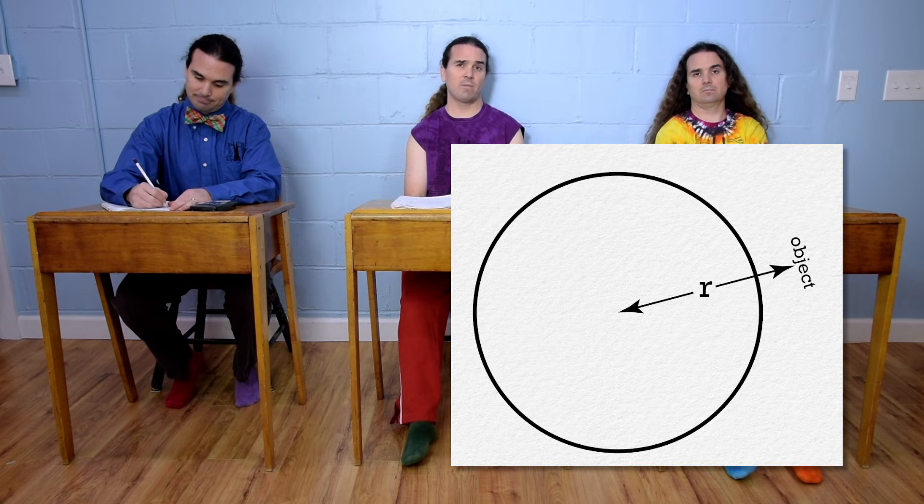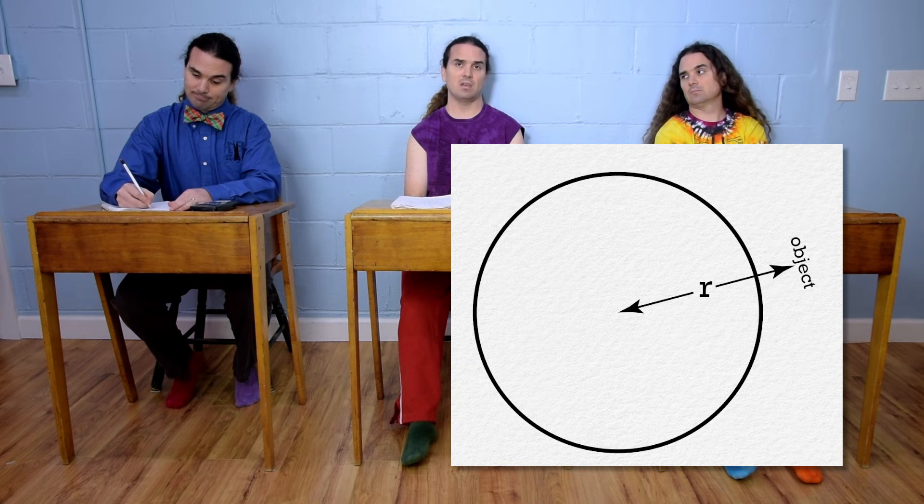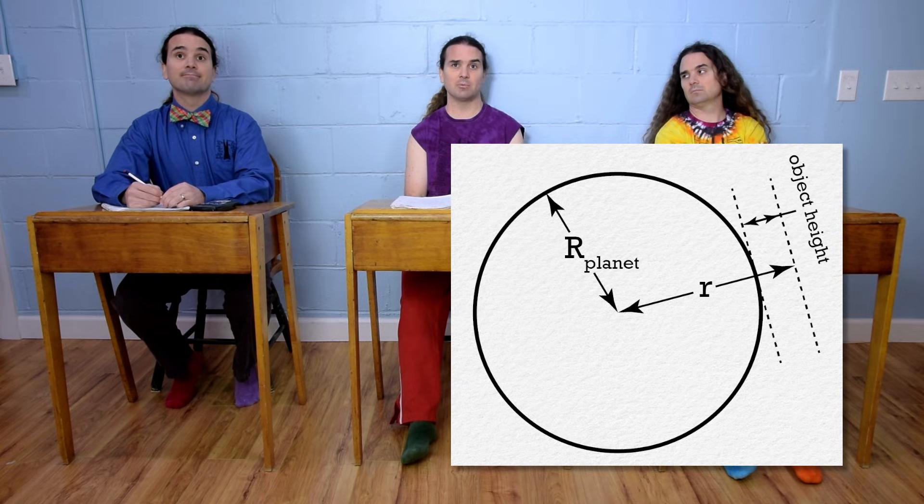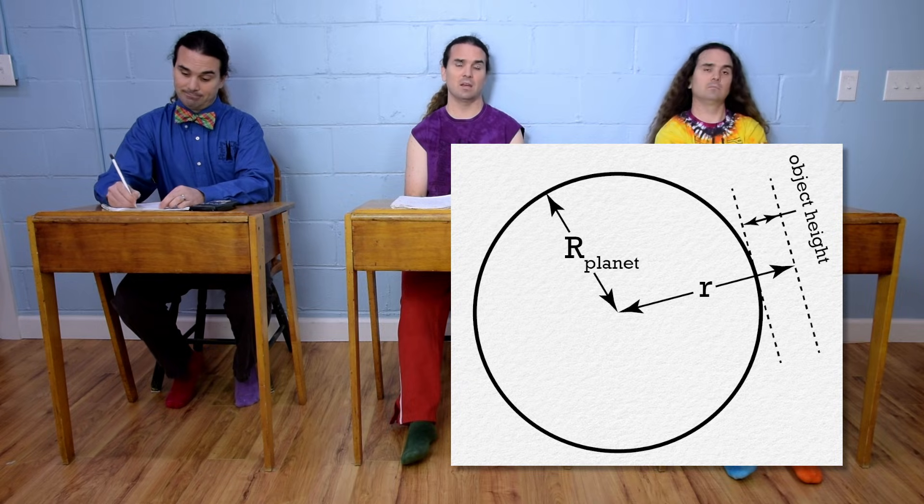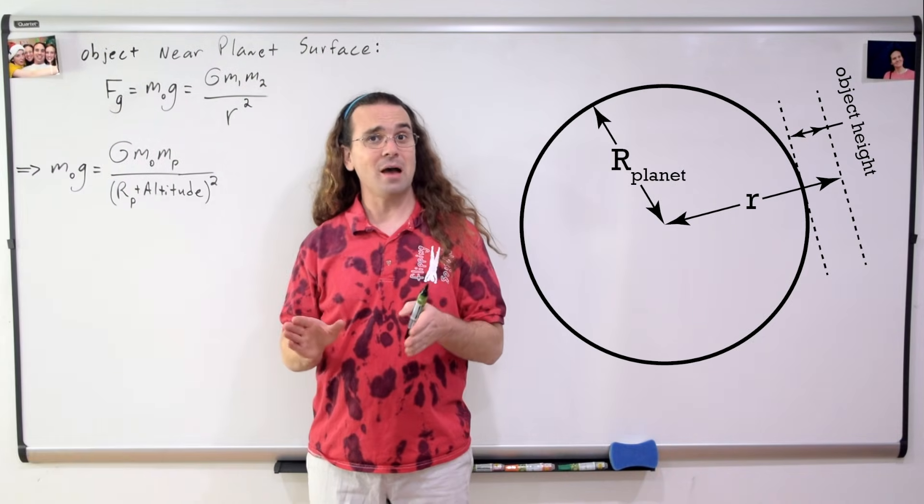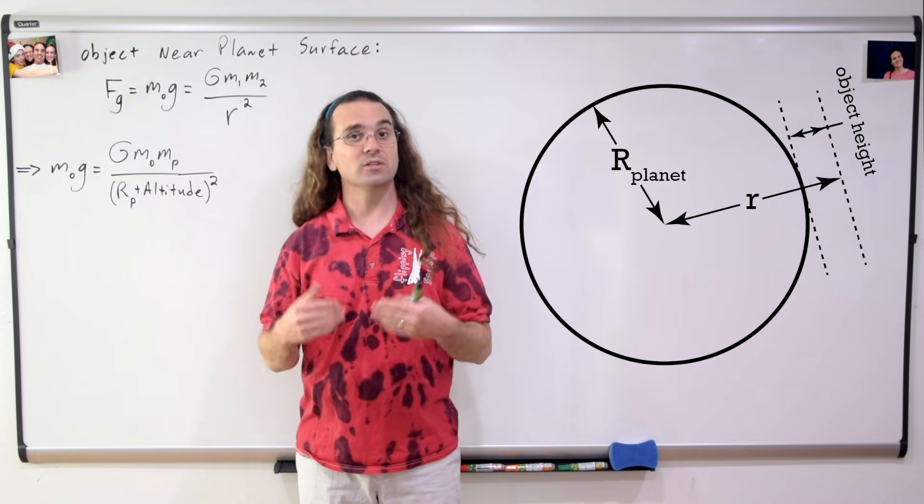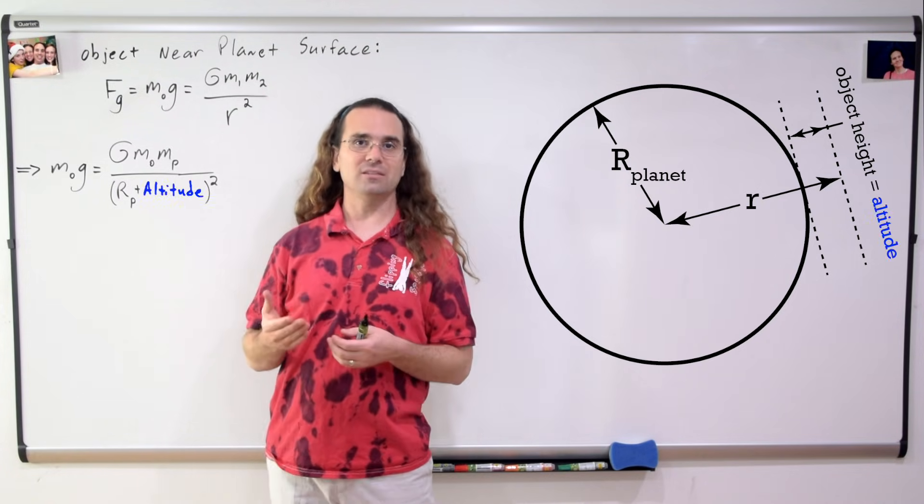r would be from the center of mass of the planet to the center of mass of the object. So, the radius of the planet plus the height the object is above the surface of the planet. The height an object is above the surface of a planet, or sea level, is called altitude.